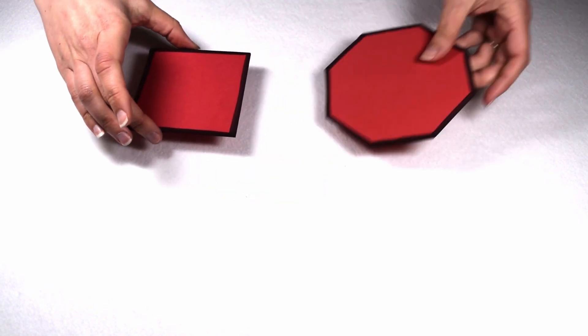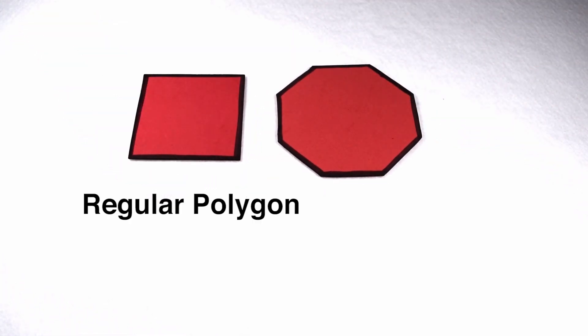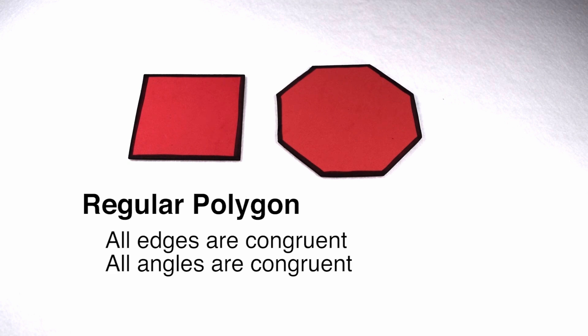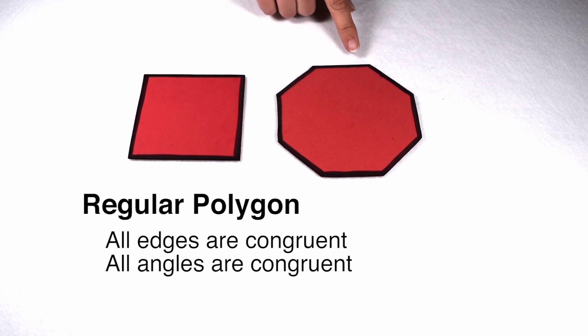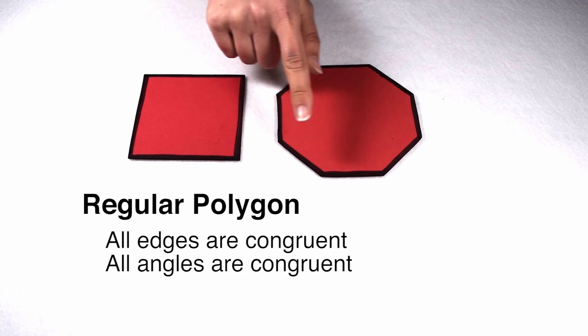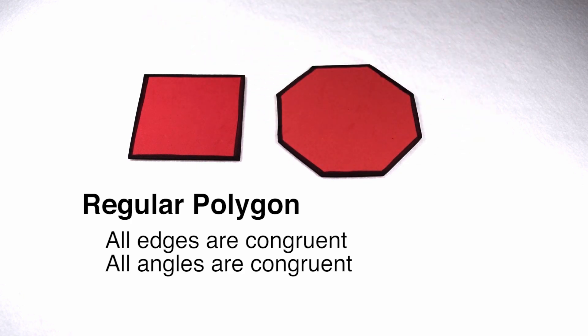Let's look first at what it takes to be a regular polygon. If a polygon is considered to be regular, that means all sides are the same length and all angles are the same measure. We can see here on the square that we have four equal sides and we have four 90 degree angles. The same is also true on this octagon where all sides are the same length and all angles are the same measure.